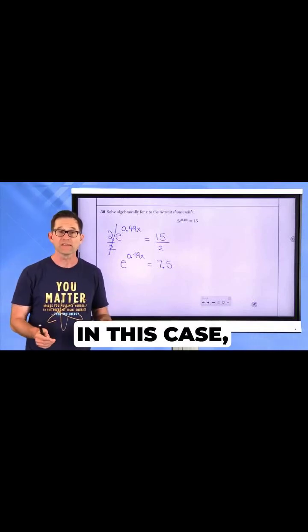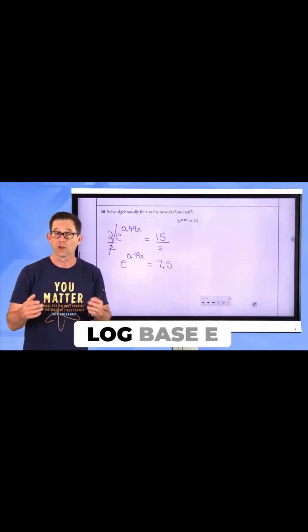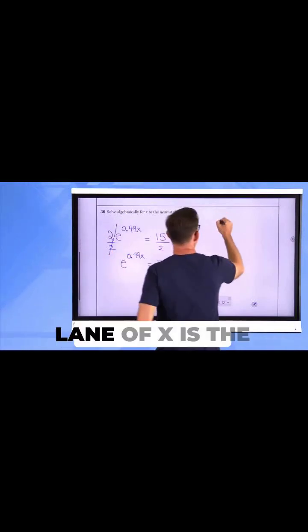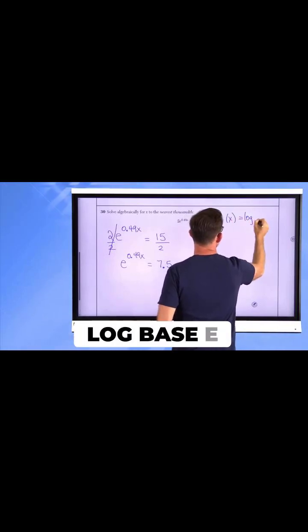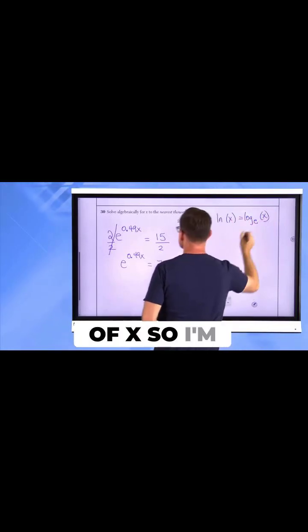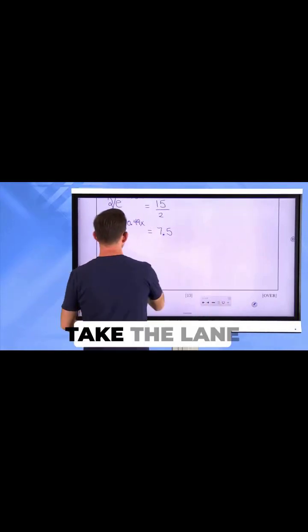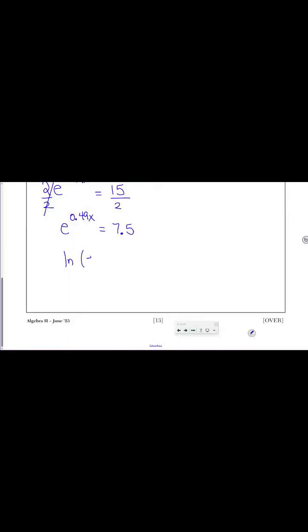In this case, since its base is e, I'm going to take the natural logarithm, which is the log base e. Remember, ln of x is the same as the log base e of x. So I'm going to literally take the ln of both sides.